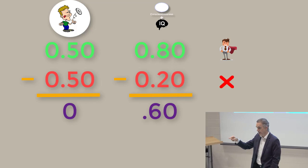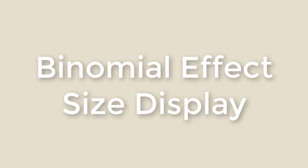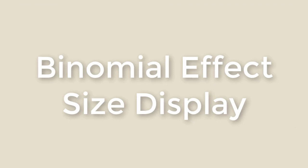Because 0.80 minus 0.20 is 0.60. So that's a really good thing to know. That's called the binomial effect size display. It's a really good thing to have in your mind. It's very simple, it's just subtraction, and it gives you some sense of the power of statistical prediction.